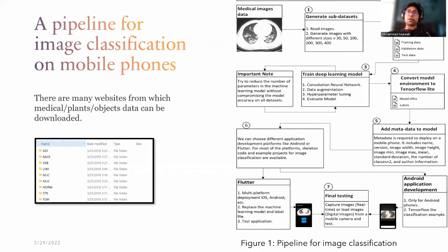The fourth step is to convert the model into TensorFlow Lite so it can be deployed on a mobile phone. At this step, you can also convert the model into a quantized version, which will improve accuracy as we observed in final testing. The fifth step is to add metadata to the model, which includes the number of categories the model will classify, the author information, and the image width and height. Adding metadata is compulsory because the mobile phone needs to know what the model is trying to do — there is a difference between the processing engine of a computer and a mobile phone, and this metadata helps the mobile phone understand what the model is doing.